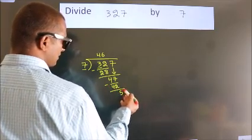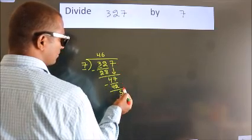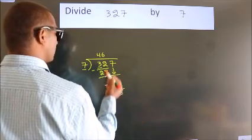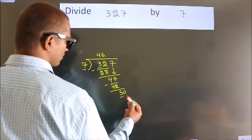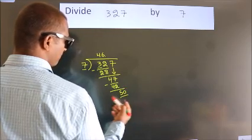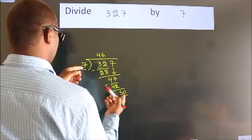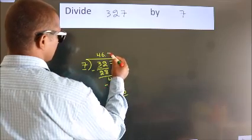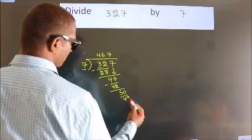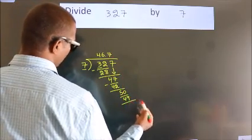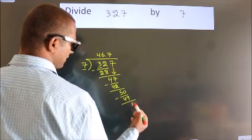After this, there are no more numbers to bring down. So what we do is, we put a dot and take 0. So 50. A number close to 50 in the 7 times table is 7 sevens, 49. Now we subtract. We get 1.